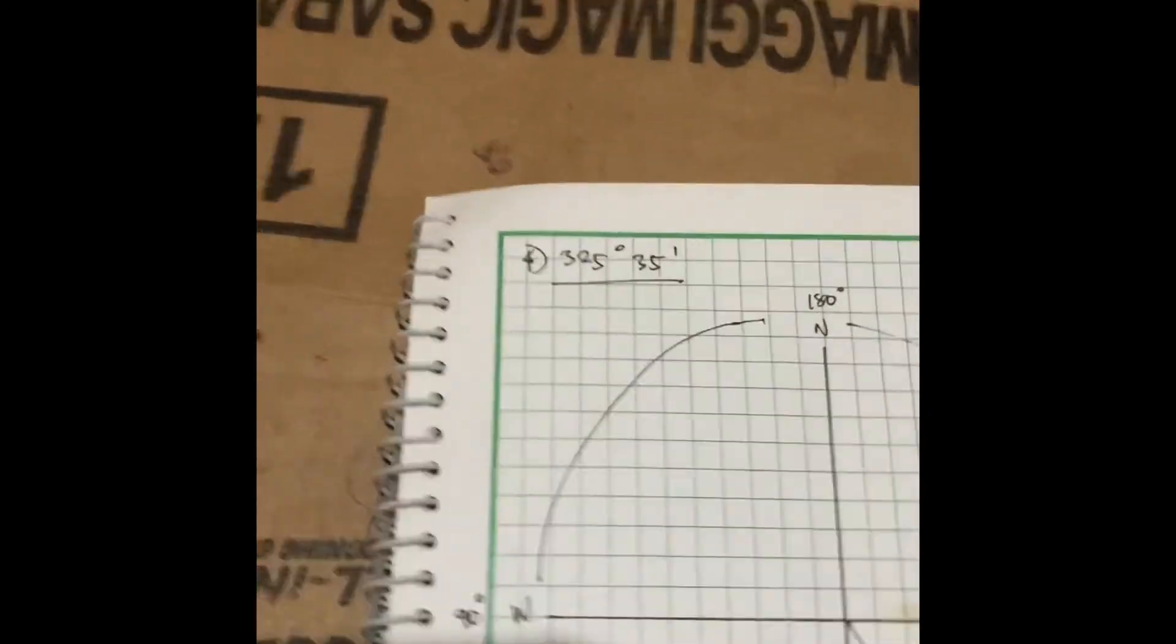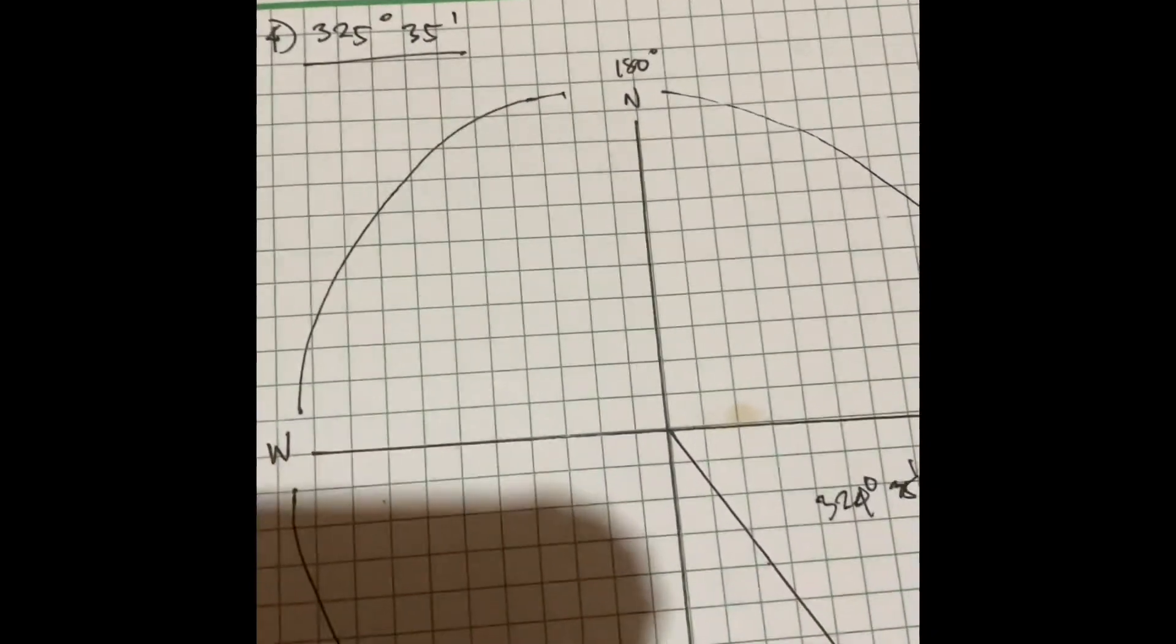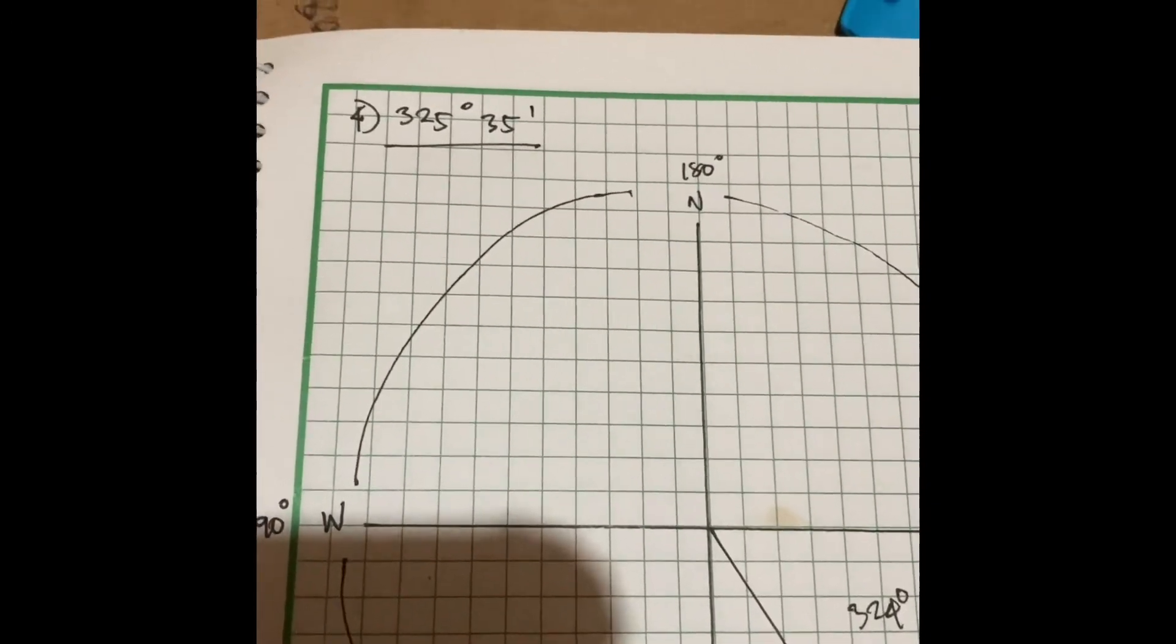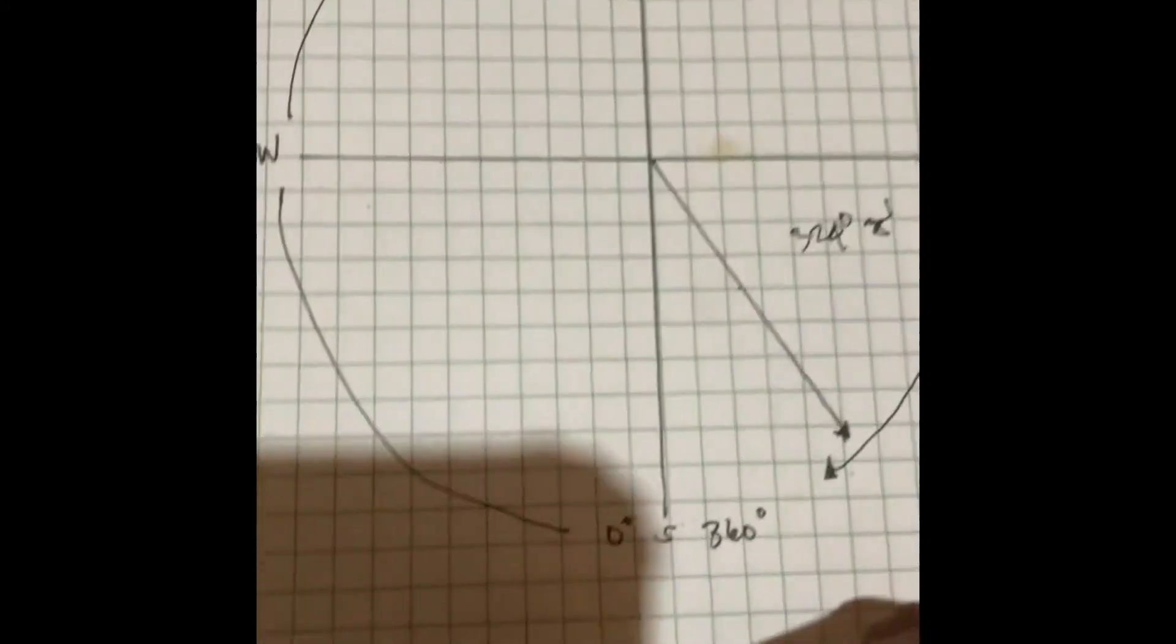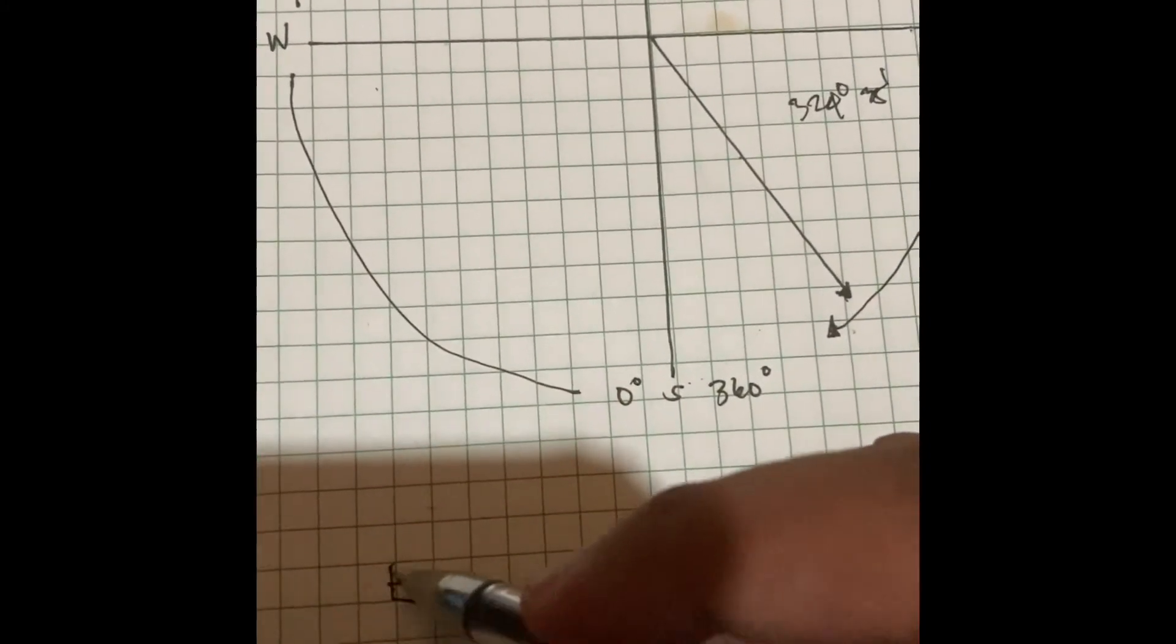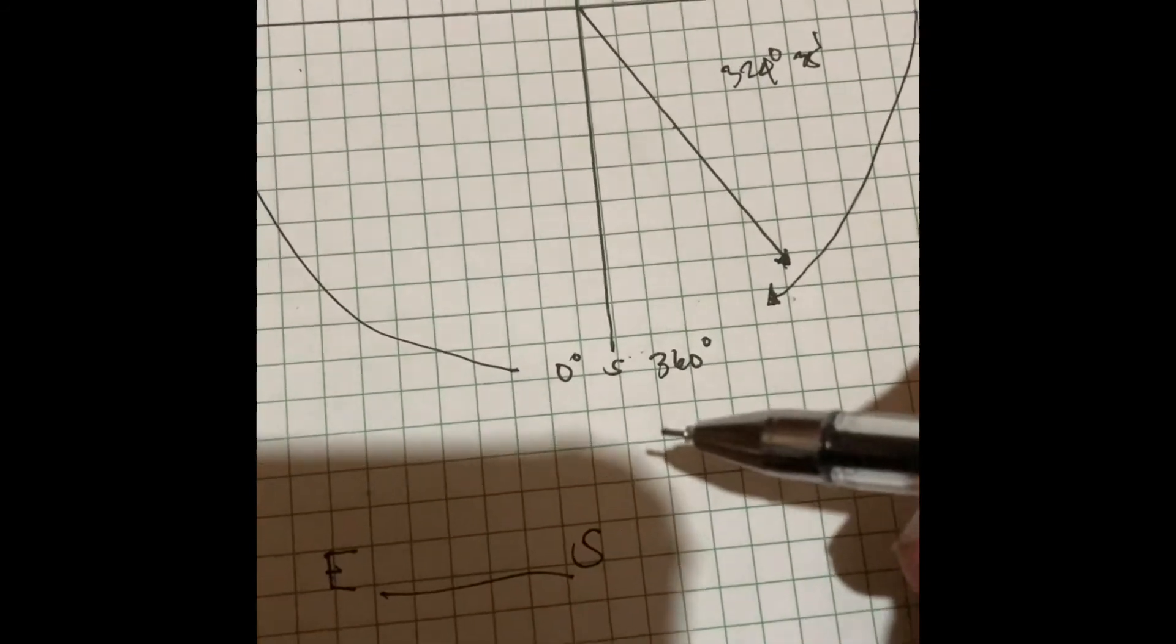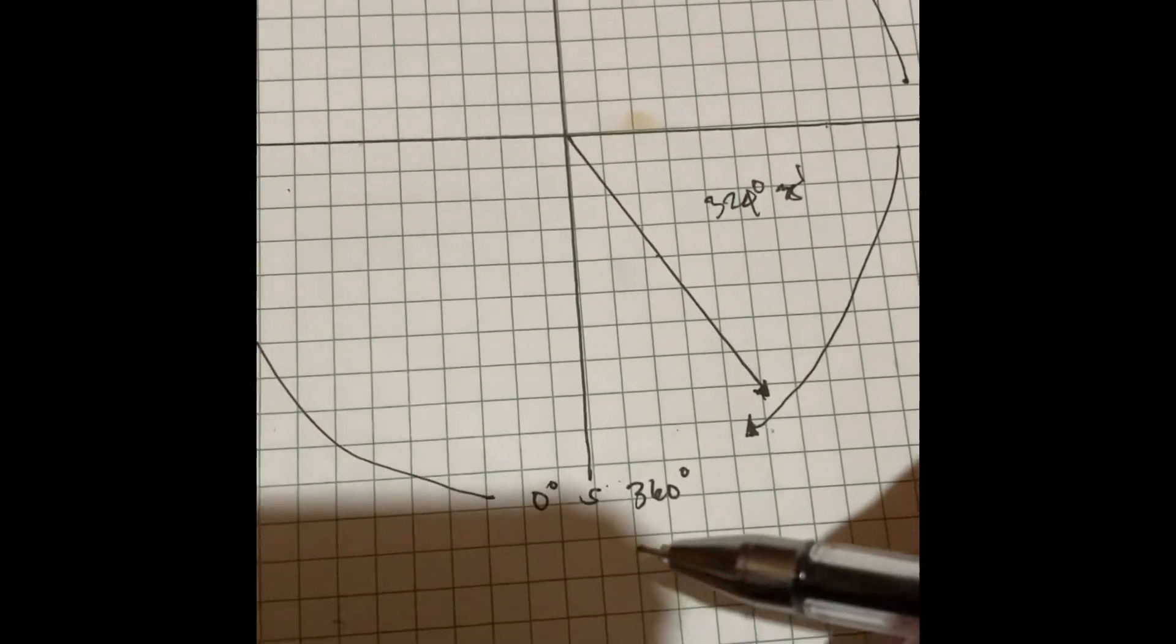To find the bearing, the location is from east to south. The equivalent to east to south is found using the same procedure.